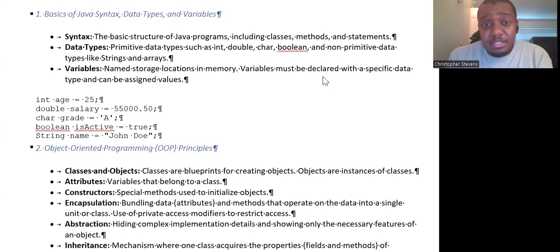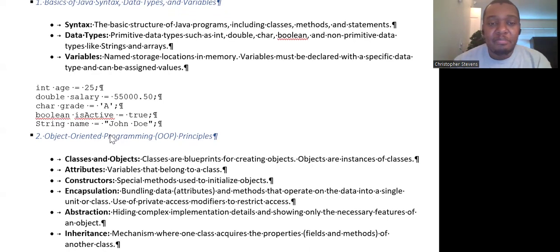So, list, array list, and then variables. Variables are named storage locations in memory. Variables must be declared with a specific data type and can be assigned values. So, we have to create a variable called age. We start with the type, in this case int age, so age is a variable. The data type is int and we're going to set it to 25. For a double, we use the keyword double. For a character, keyword char - remember that characters are in single quotes. And for a boolean, we have true or false, and that is all lowercase. For strings, make sure you put double quotes around it.